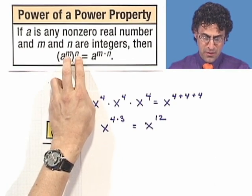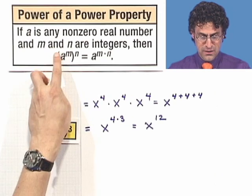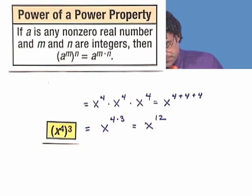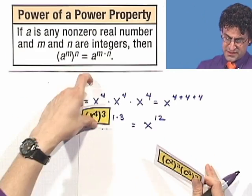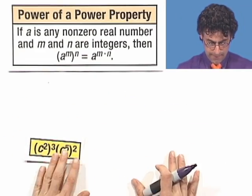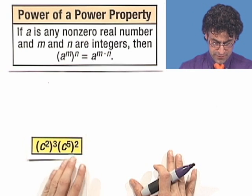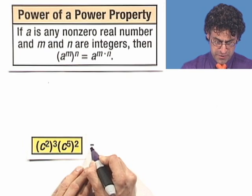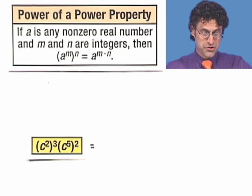So we multiply the powers when in fact we're raising one power to another power. So let's try this with this little example right here. So let's see if we can simplify the expression c squared all cubed multiplied by c to the fifth squared.